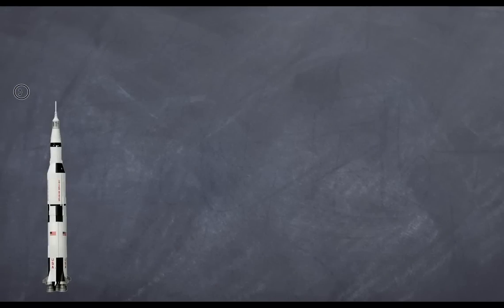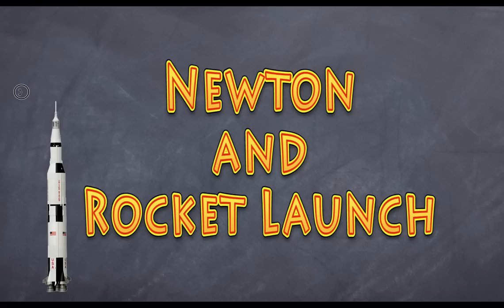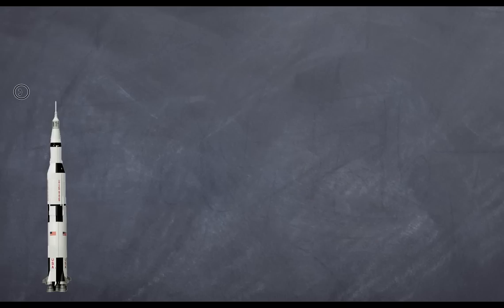Welcome to High School Physics Explained. Today I want to go through the principles of Newton's laws of motion as they apply to a Saturn V rocket launching into orbit. I'm going to assume you already know why the Saturn V is a multi-stage rocket, but in quick summary: the rocket is required to reach at least orbital velocity, which is around seven to eight kilometers per second, and it can't do that instantaneously, so it does it in stages.